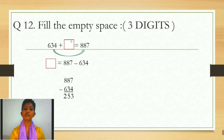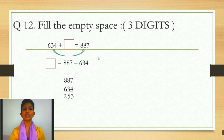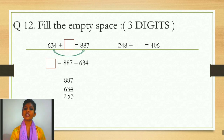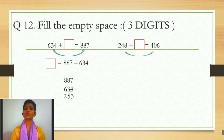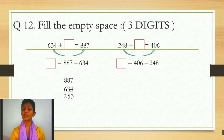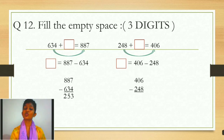Ab is 253 ko yahan pe likh sakte hain. Aur 634 se plus kar sakte hain aur aap check kar sakte ho ki aapko 887 answer mil raha hai ki nahin. This was the simple sum. Ab aage aate hain — agar carry waale sums aa jayenge. The question is: 248 plus box equals to 406. Again the same method: take 248 over to 406, so box equals to 406 minus 248.